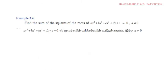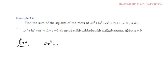Example 3.4: Find the sum of the squares of the roots of ax⁴ plus bx³ plus cx² plus dx plus e equal to 0, where a is not equal to 0.